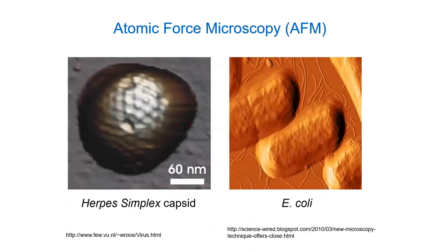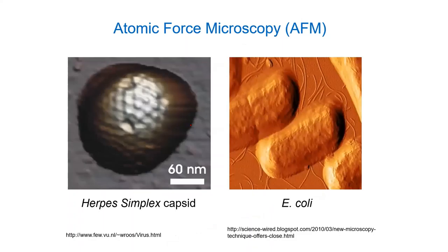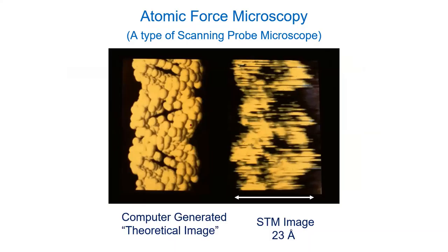We can actually get down to see viruses with AFM — here's herpes simplex virus where you can see the capsid proteins on the surface, the little lumps. Here's another image of E. coli. There's not a lot out there yet, but it's starting to increase as these things find more use and prices go down. Here's a really cool one — a computer-generated image of the DNA double helix on the left, and on the right the actual atomic force microscopy image. You can actually make out the helix — it's not perfect due to some wobbling and noise, but really incredible.